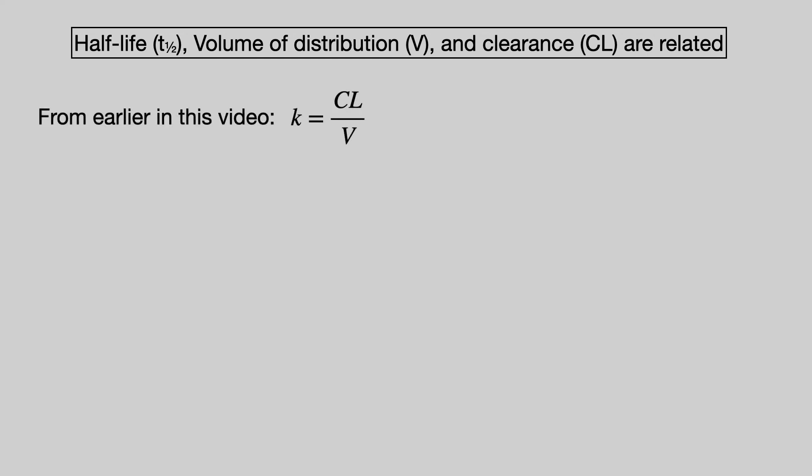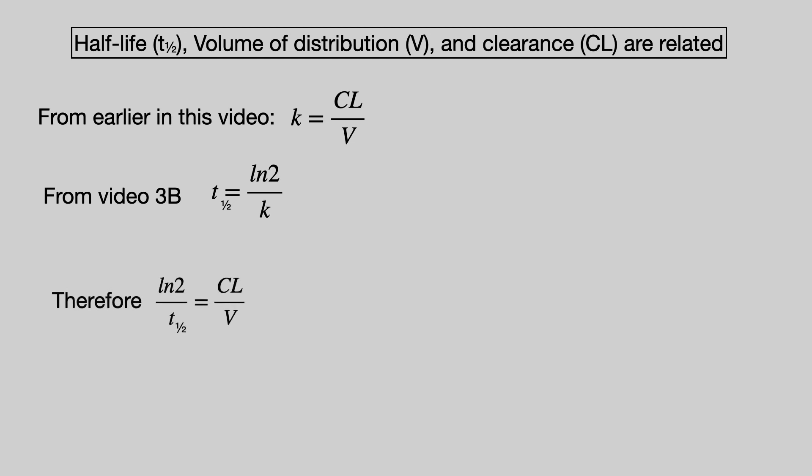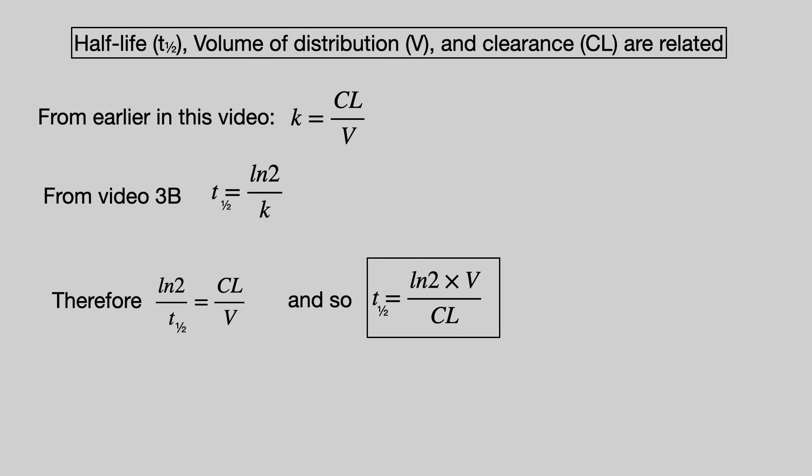Let's now look at the relationship between half-life, volume of distribution, and clearance. From earlier in this video, the elimination rate constant equals clearance divided by volume of distribution. From Video 3b, half-life equals the natural log of 2 divided by the elimination rate constant. Therefore, by substitution, half-life equals the natural log of 2 times the volume of distribution divided by clearance. That is quite an important equation.